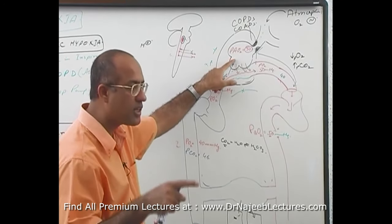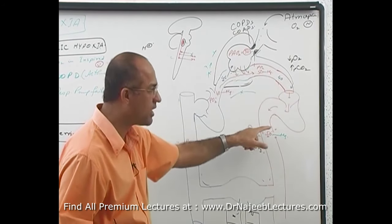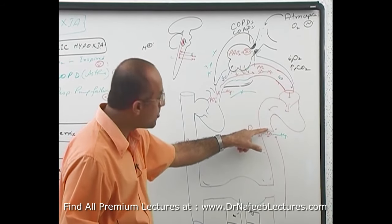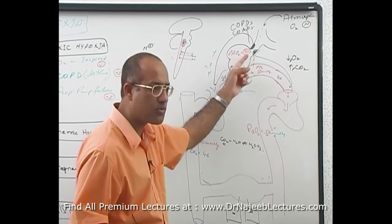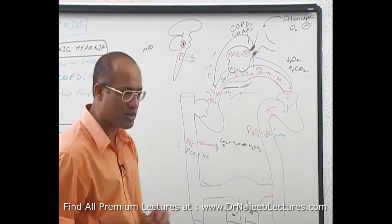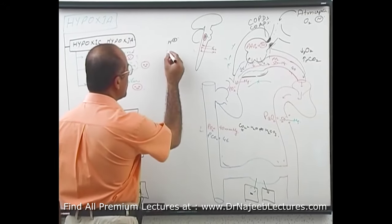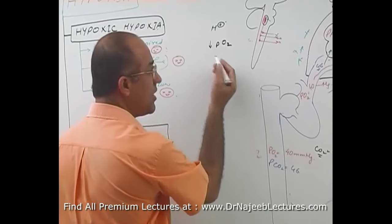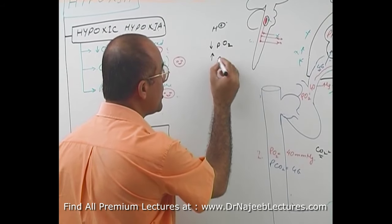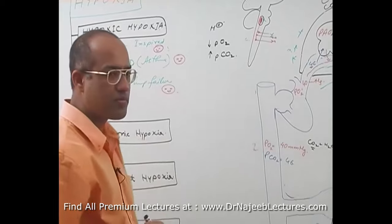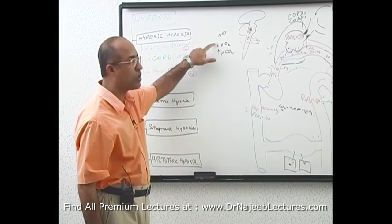If a patient is chronically hypoventilating, there will be two results. Number one, there will be less oxygen in the alveoli and less oxygen in the blood — that is hypoxemia. Number two, there will be increased carbon dioxide accumulation because CO2 is not being exchanged with fresh air, resulting in increased carbon dioxide in the blood — hypercapnia. Actually, respiratory centers are more sensitive to elevated carbon dioxide than to low oxygen in acute phases.